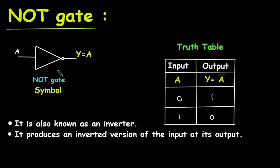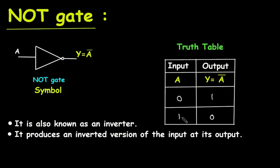NOT gate — this is the symbol for NOT gate. NOT gate has only one input and only one output. Y is equal to A-bar, where A-bar is the complement of A. It is also known as an inverter — NOT gate produces an inverted version of the input at its output. So when the input is low, the output is high, and when the input is high, the output is low. This is the truth table for NOT gate: when the input is 0, the output is 1, and when the input is 1, the output is 0.